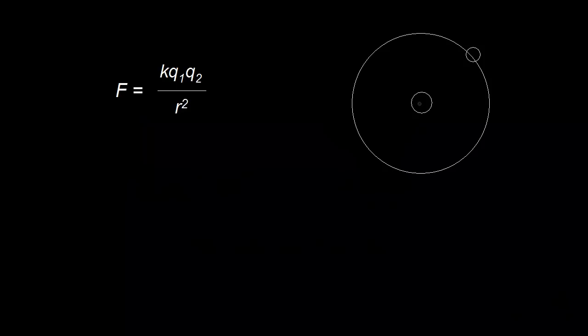In the Bohr model of the hydrogen atom, we have one proton in the nucleus, so I draw a positive charge here, and a negatively charged electron orbiting the nucleus — kind of like the planets orbiting the sun. Even though the Bohr model is not reality, it is useful as a concept of the atom. We can calculate the radius of this circle, and we're actually going to do that in this video.